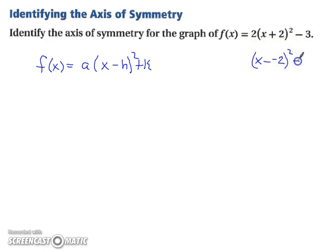And the rest of it can come along for the ride. But since we're dealing with the axis of symmetry, the only thing we're really worried about is our h value. And in this case, h equals negative 2. So our axis of symmetry is x equals negative 2. It's that vertical line at negative 2 that makes up the axis of symmetry.